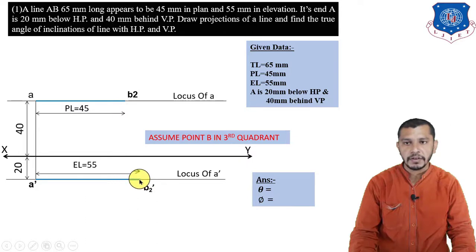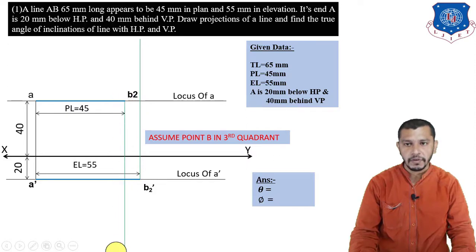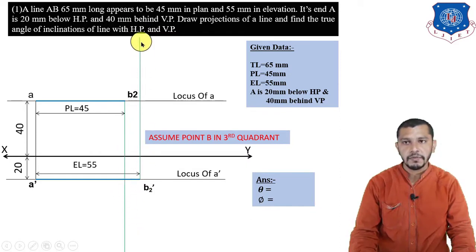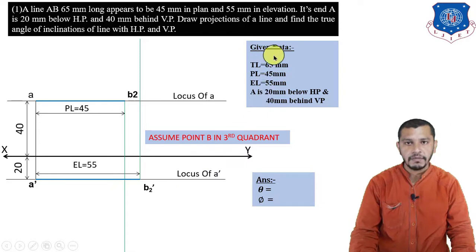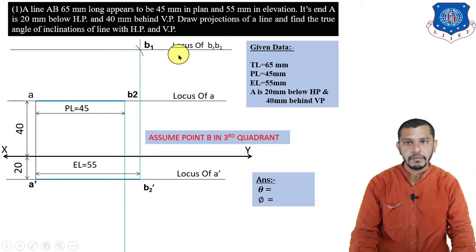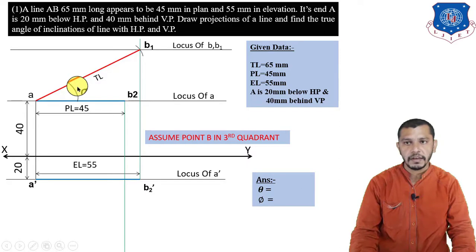Draw a straight line from B2-dash in the direction of the locus of B, and from B2 draw a straight line in the direction of the locus of B-dash. Since point B is assumed in the third quadrant, the plan of B will be above the XY line and the elevation of B will be below. On the respective projectors, we get B1 and B1-dash. Take the true length 65mm, center at A, give an arc on this projector to get B1 — this is the locus of B. Connecting B1 to A gives the true length, inclined at angle phi.